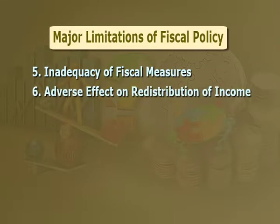Number six: adverse effect on redistribution of income. It is felt that fiscal policy measures redistribute income, but the actual effect will be uncertain. If income is redistributed in favor of low-income classes whose marginal propensity to consume is high, the effect will be an increase in total demand. But the fiscal action will be contractionary if a larger part of the additional income goes to people having a higher marginal propensity to save.